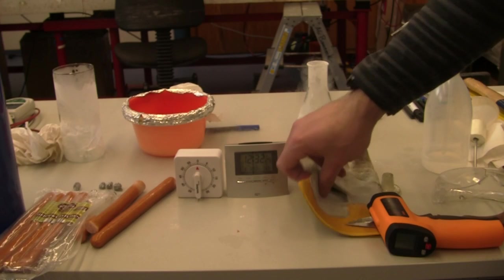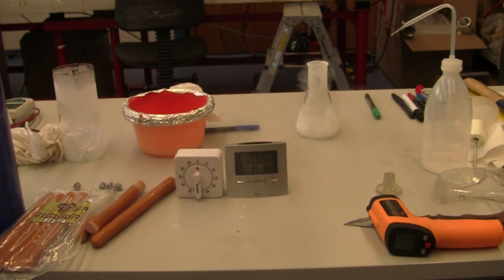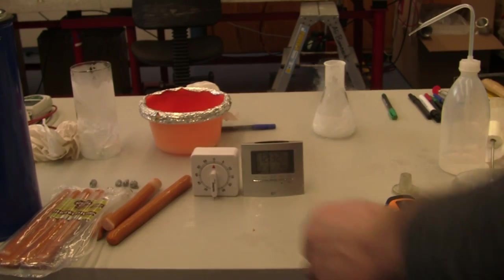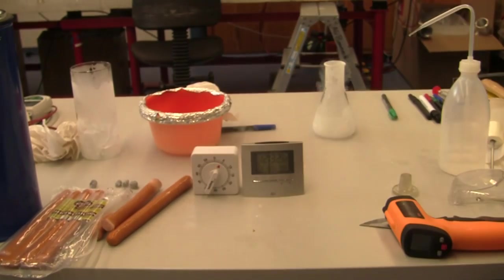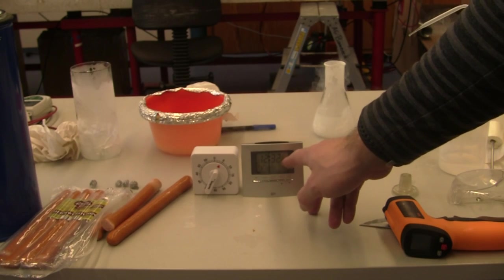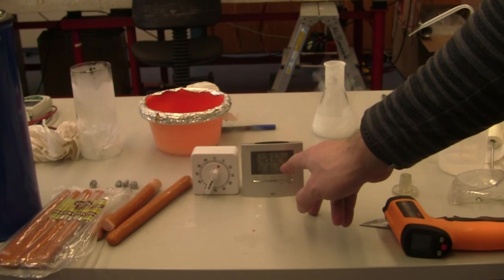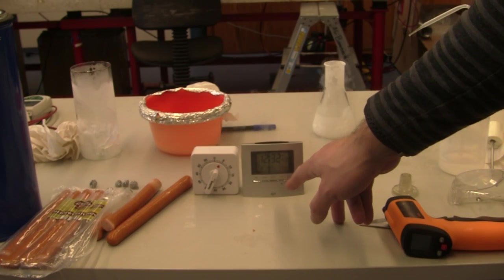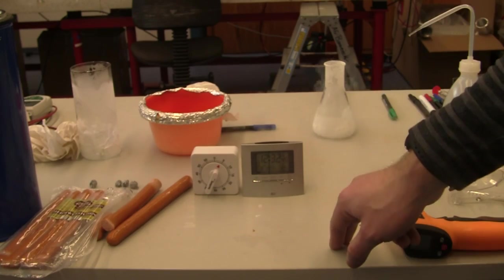So here I have two clocks. One runs on clockwork and the other is digital. It's got an LCD liquid crystal display and it runs on batteries. So the question: which one of these will stop working first if I were to dunk them in liquid nitrogen?